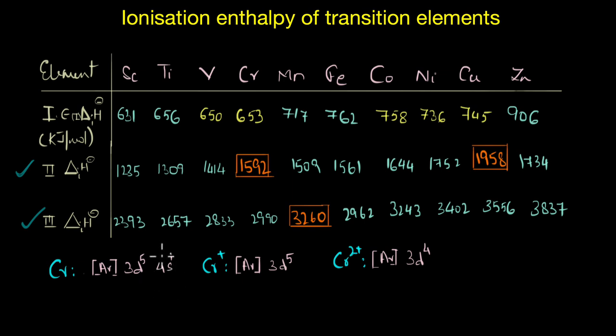When it loses one electron, it gets a very stable electronic configuration which is 3d5. So that means to form Cr2+ ions, we need to disturb a highly stable state here and that's not very desirable for chromium.